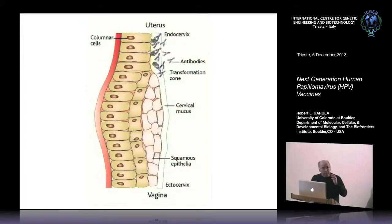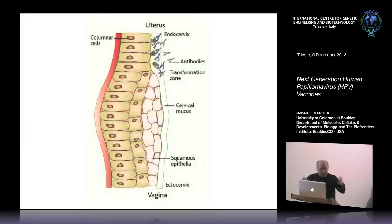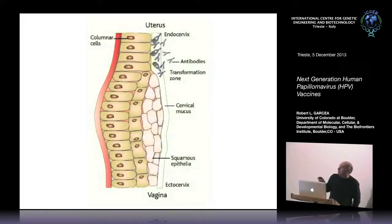A perplexing thing about these vaccines: they're given intramuscularly, but they're going to prevent an infection occurring in the epithelium. When trained in medical school, you'd think you'd need IgA to protect from something coming into mucosal membranes. But actually it's IgG — in the cervical mucus, IgG is both exudated and transudated, probably neutralizing the virus particles. To get infection, you have to get down to the basal cells, so as long as you prevent penetration down to the basal cells, you won't get an infection.